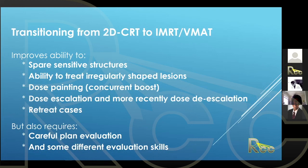Lastly, retreatment cases are much more manageable with IMRT and VMAT. It's almost impossible to retreatment head and neck cases comfortably with 2D or 3D. For example, if a cord has seen full dose to 4,500 cGy and a patient comes back and you need to stay completely off of it, having modulated therapy definitely makes it easier.